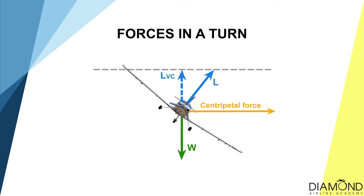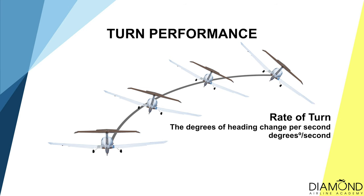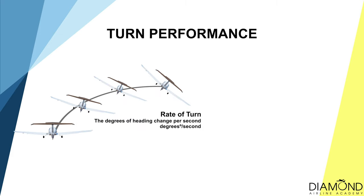Earlier, we talked about load factor, which is the ratio of lift over weight. When doing a medium level turn, more lift is needed to increase the vertical component of lift to overcome the weight. Because of that, lift will be more than weight, so when we are doing a medium level turn, the load factor will be more than 1. To assess turning performance, we judge by the rate of turn and the radius of turn.